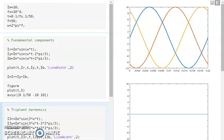Here I use the MATLAB codings to graphically illustrate the phase shifting of the triplet harmonics as against the fundamental components.